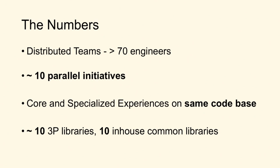We are a large team, distributed between the US and India, roughly around 70 engineers. At any one point in time we're working on 10 parallel initiatives, which include both business and engineering requirements. We are broadly divided into a core and a specialized experience — the fashion product page will look slightly different from a core product page. We largely work off the same code base, sharing around 10 third-party libraries and 10 in-house libraries across the board. We do have automation, but we're not 100% automation covered.